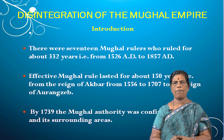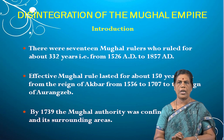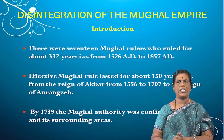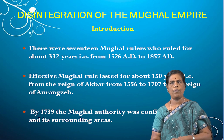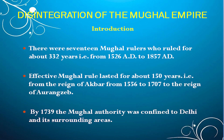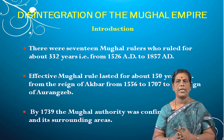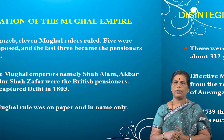Effective Mughal rule lasted for about 150 years, that is from the reign of Akbar from 1556 to the reign of Aurangzeb up to 1707. These were the famous effective Mughal rulers. In the year 1739, the Mughal authority was confined to Delhi and its surrounding areas only.